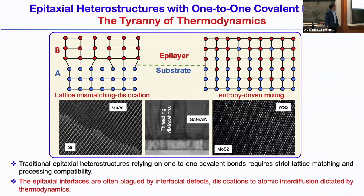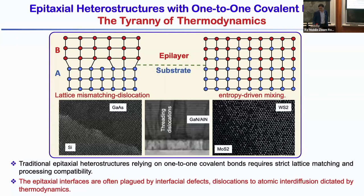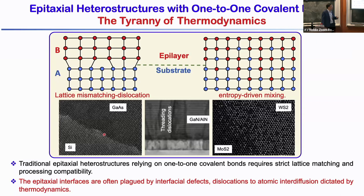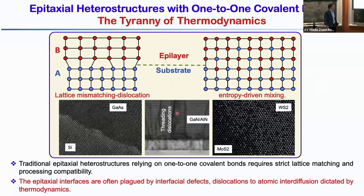Traditionally we grow these materials using so-called epitaxial growth — we use chemical bonds to integrate two different materials together. Because these materials are integrated with chemical bonds, there are certain constraints. First of all, they have to have proper lattice matching. If the lattice mismatch is even just a few percent, for example between silicon and gallium arsenide, we start to see defects at the interface, and very often these defects propagate through the entire epitaxial layer forming threading dislocations.